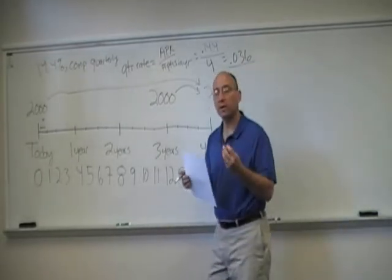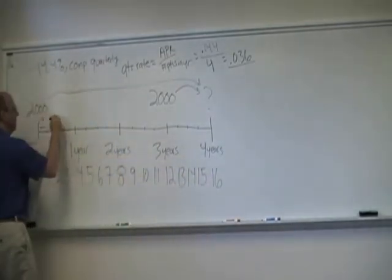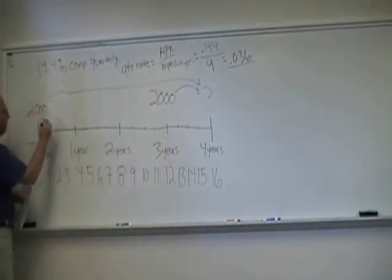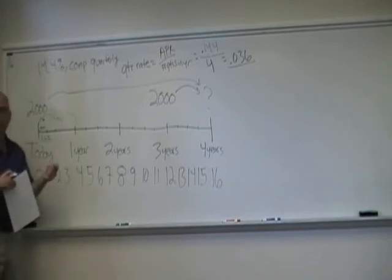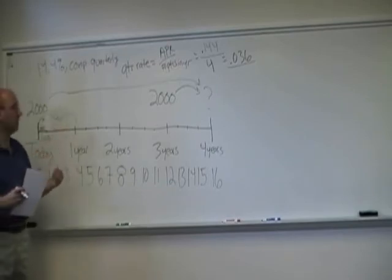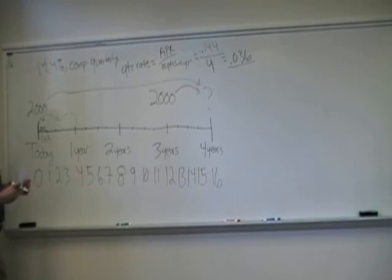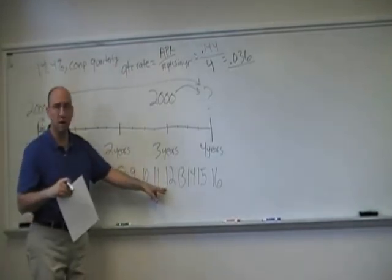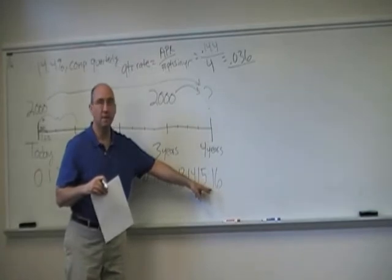So again, she's not really going to be earning 14.4% over the whole year. She's going to be earning 3.6% in this quarter. And then the second quarter, she'll be earning 3.6%. But it's not just on the initial 2,000. It's on the 2,000 plus the amount of interest that got earned over the first quarter. So we want to make sure our periods and our timeline represent a quarter, and therefore, we can think of it as investing $2,000 at time zero, plus investing $2,000 at time 12, and we want to know how much money she'll have at time 16.